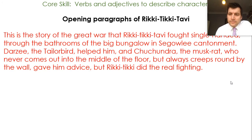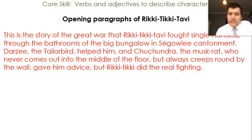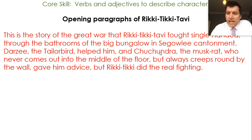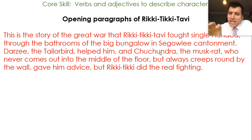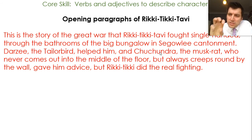This is the story of the great war that Rikki-Tikki-Tavi fought single-handed through the bathrooms of the big bungalow in the Segowlee cantonment. Darzi, the tailor bird, helped him, and Chuchundra, the muskrat, who never comes out in the middle of the floor but always creeps around by the wall, gave him advice. But Rikki-Tikki did the real fighting. We can see animals being used as characters, one character being given advice, and the setting described — the bathrooms of the big bungalow.